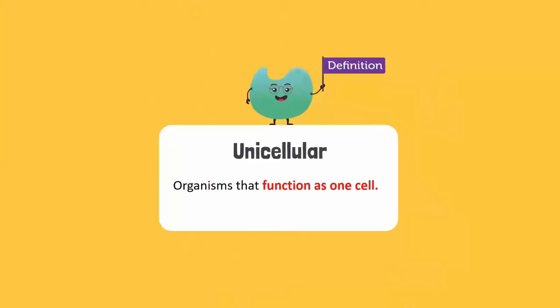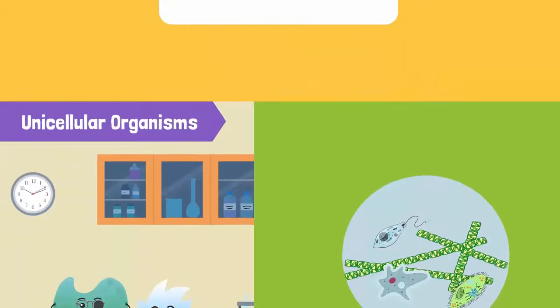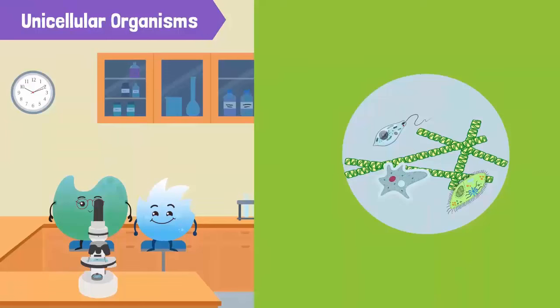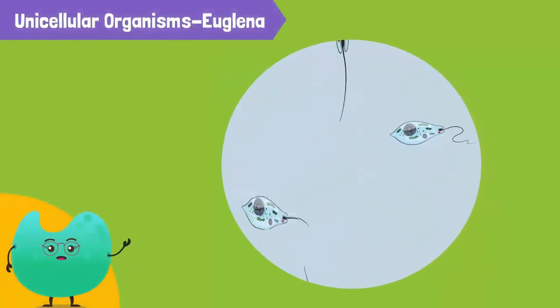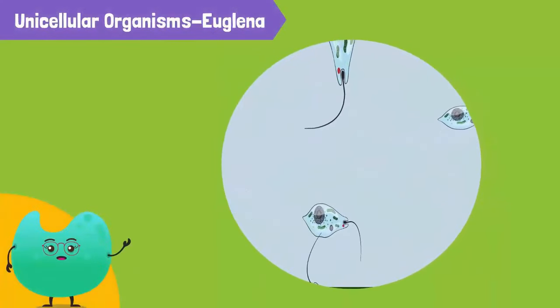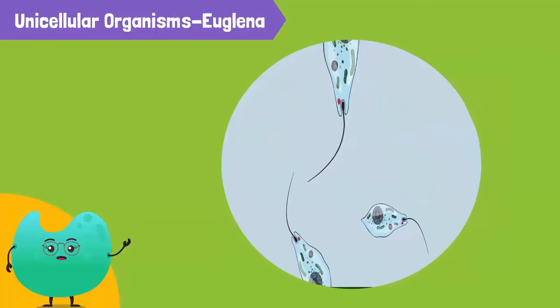These organisms are amoeba, paramecium, and euglena. Euglena has both plant and animal-like characteristics.